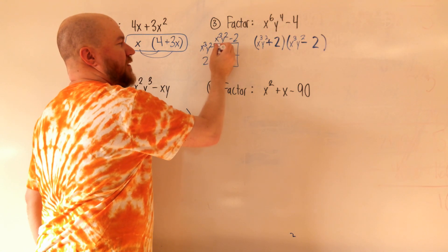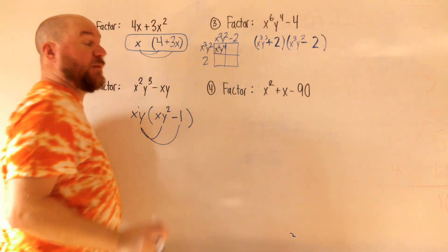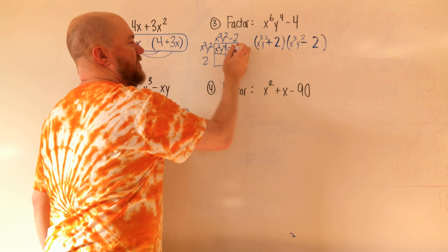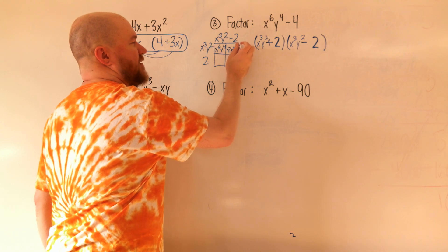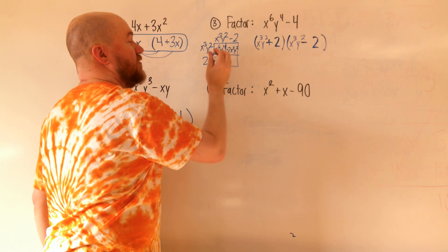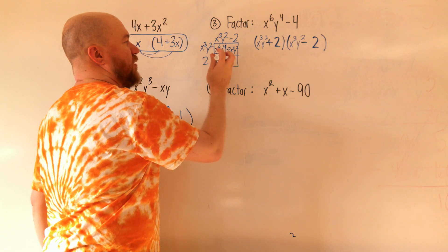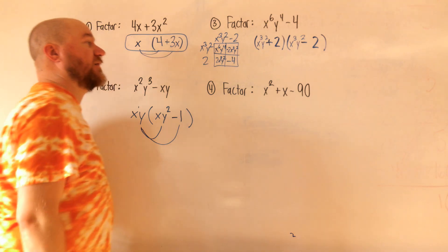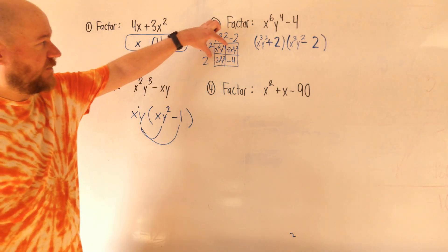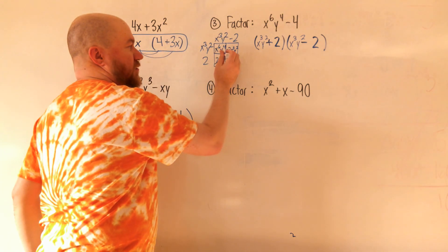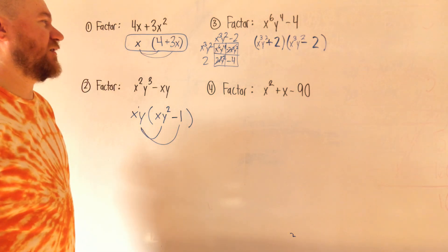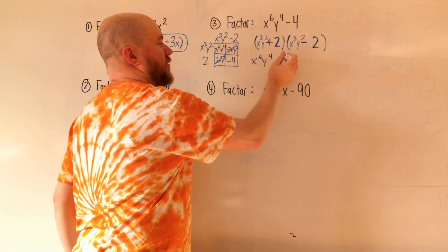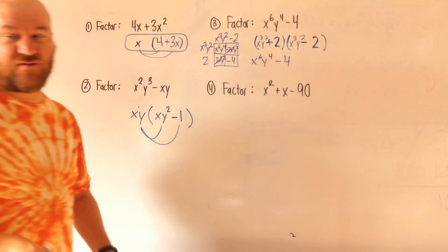When I multiply x³y² by x³y², I get x⁶y⁴ — remember, when you multiply you add exponents. The cross terms are negative 2x³y² and positive 2x³y², and the last cell is negative four. When I combine like terms, the positive and negative 2x³y² are opposites and cancel out. So the result combines to x⁶y⁴ minus four, which was our original problem — confirming the factored form is correct.